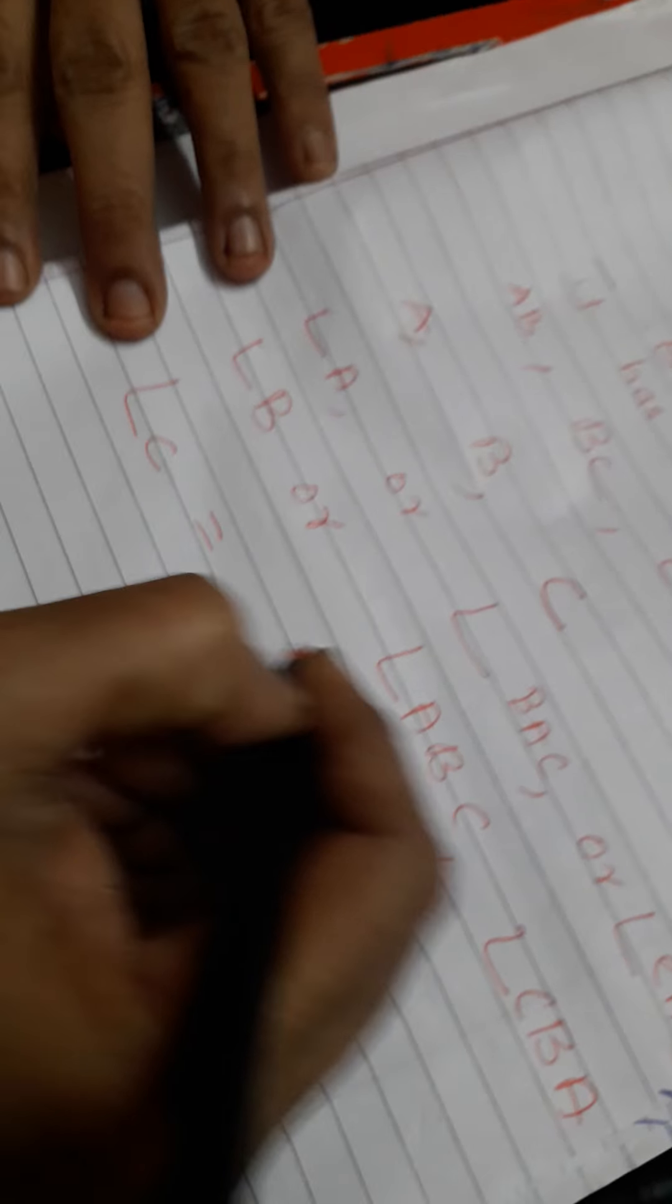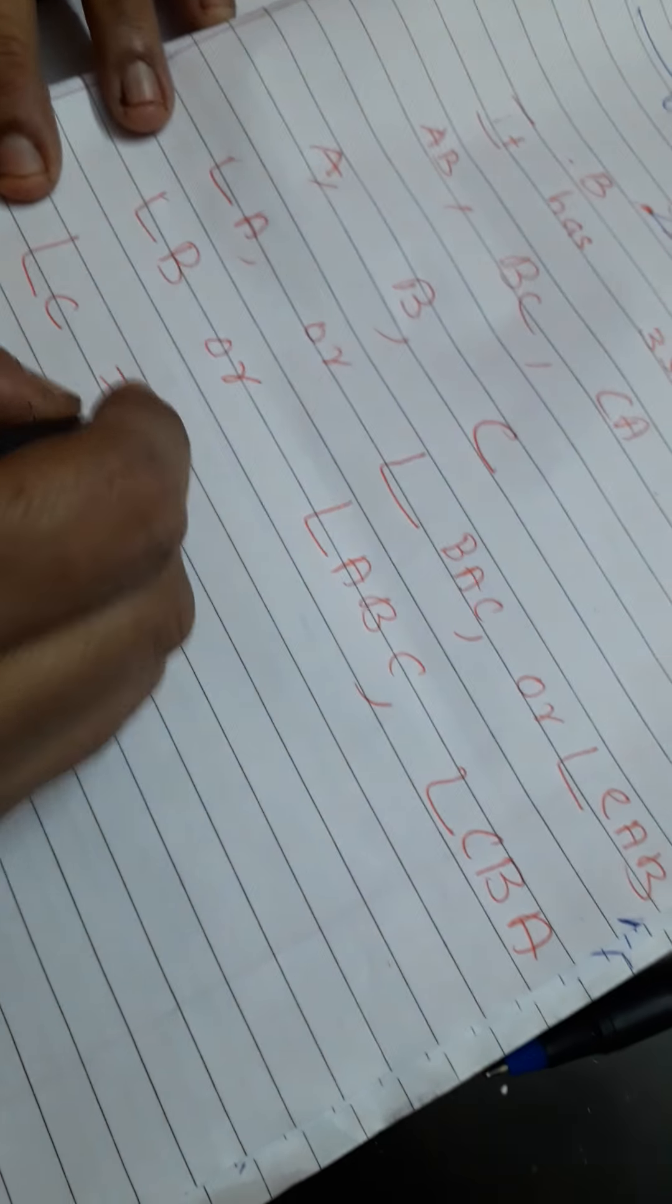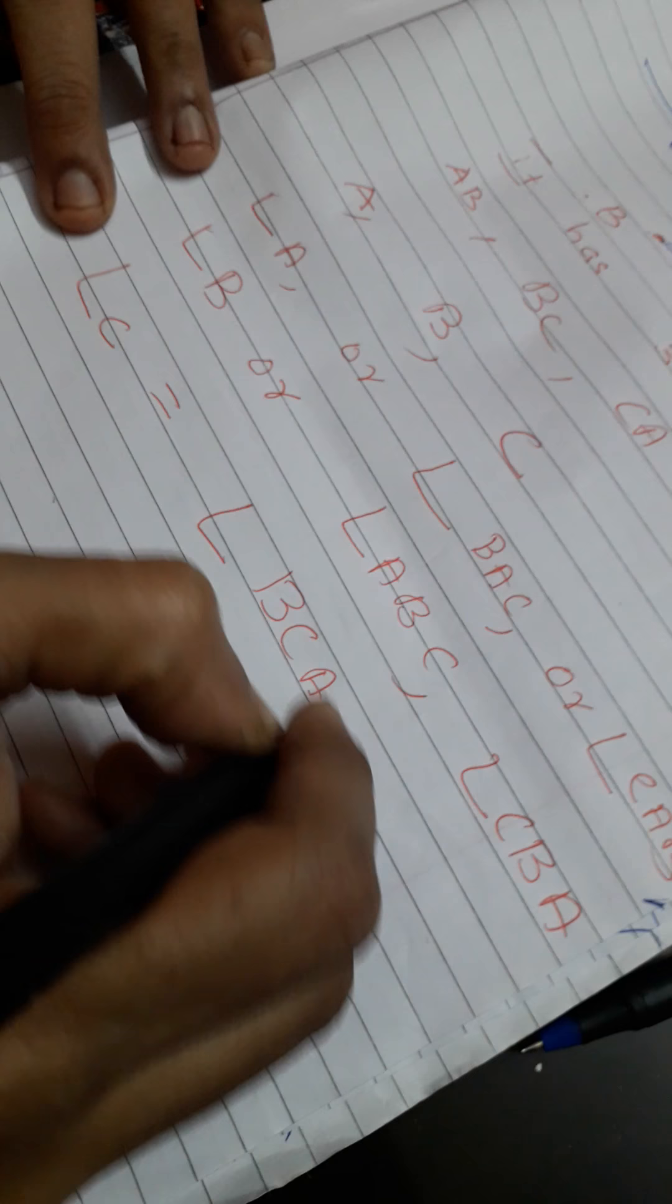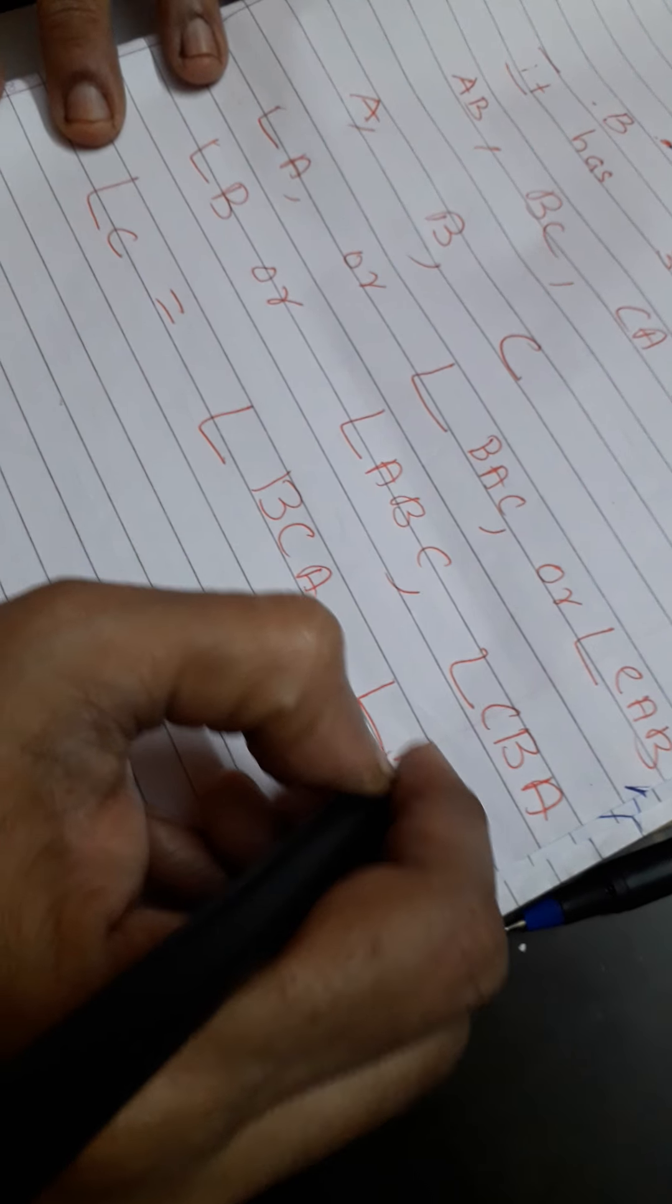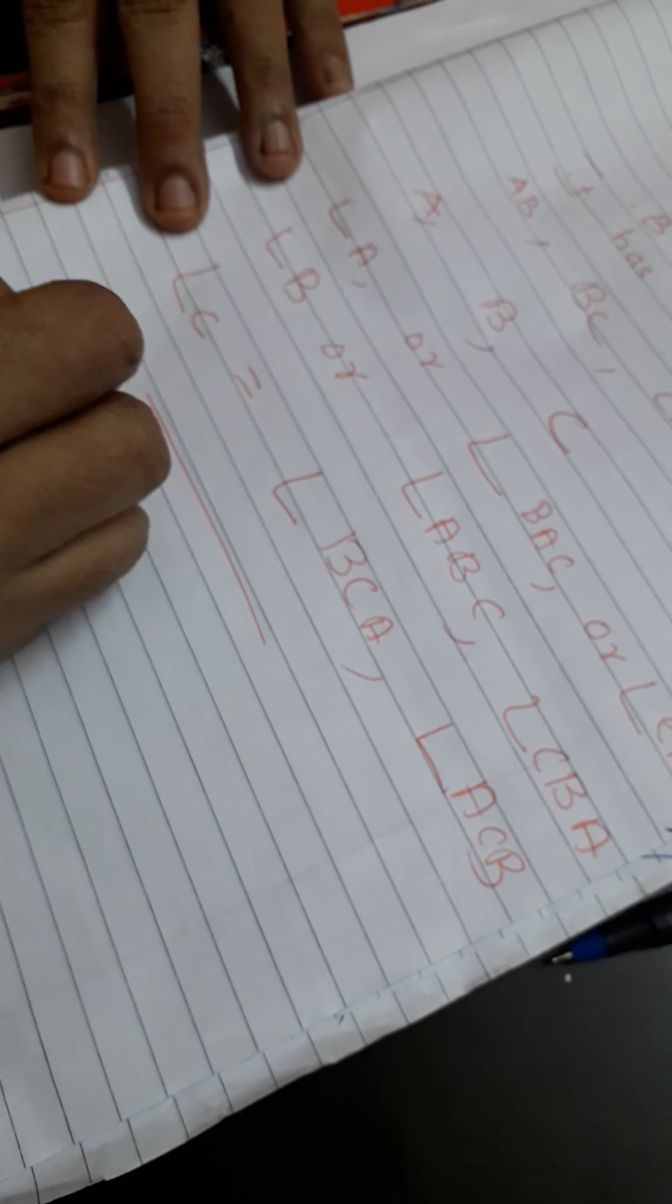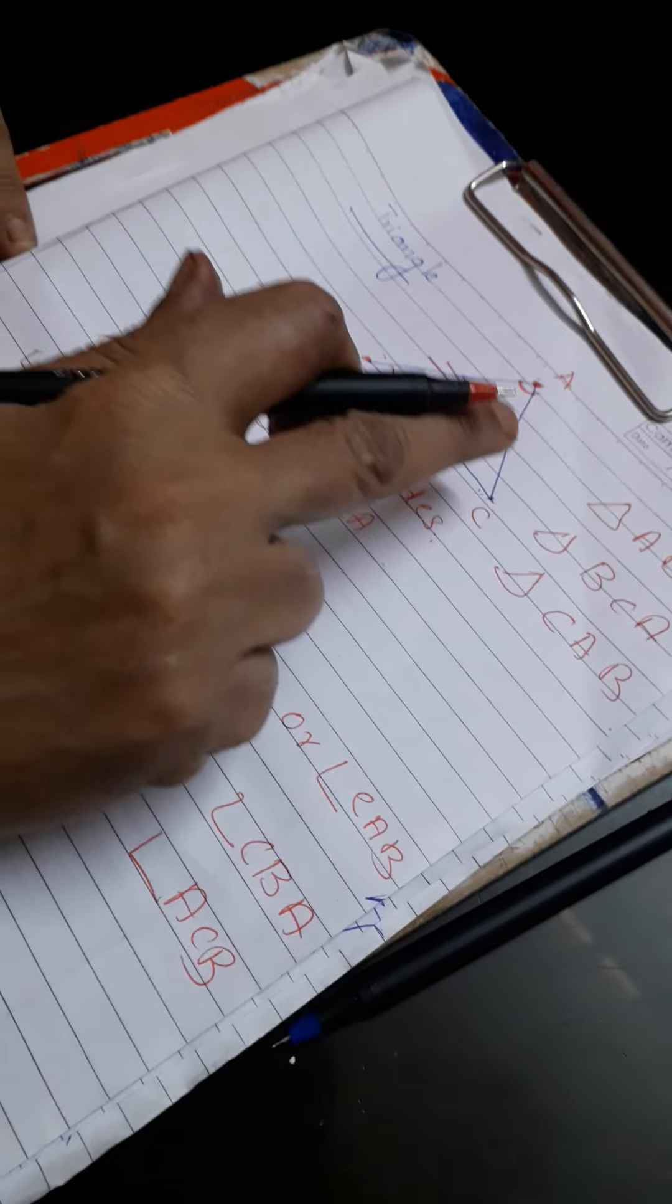Both CBA and ABC are angle B. In the same way, we can call it as angle BCA and angle ACB. So it has three sides, three vertices, and three angles are formed.